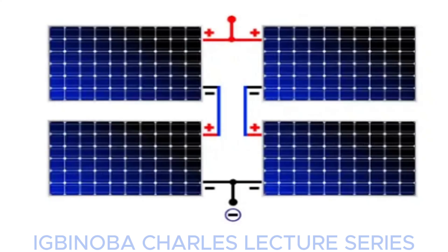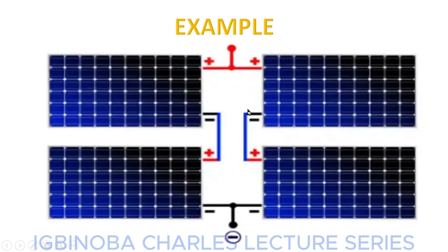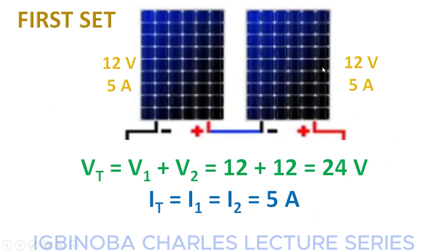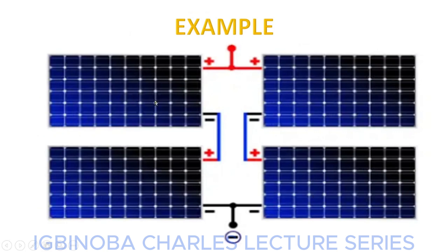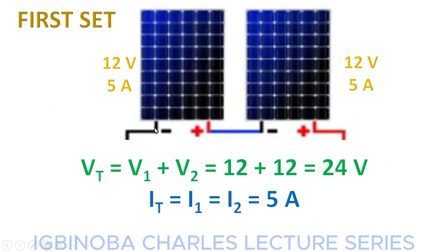After connecting panels in series-parallel, how do we know the total voltage, total current, and total power generated? We are going to use this example to calculate those values. Assume each panel has the same parameters: panel one is rated 12 volts, 5 amps; panel two is 12 volts, 5 amps; panel three is 12 volts, 5 amps; and panel four is 12 volts, 5 amps. One set is connected in series and another set is connected in series.